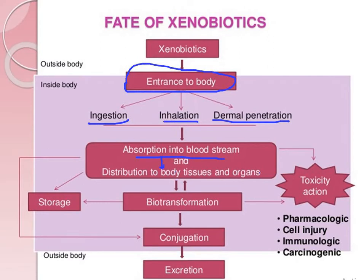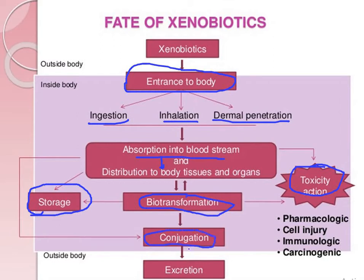After these processes happen, there are three different fates: one is storage, another is toxic action, and the third is biotransformation followed by conjugation, after which the compound will be excreted. If some change is happening, obviously it will be excreted from the body. Today we will see a little more detail in this process.